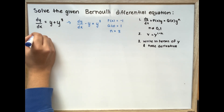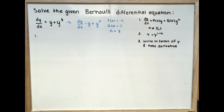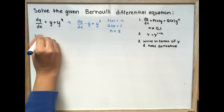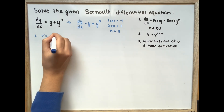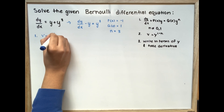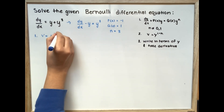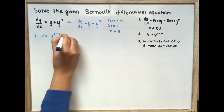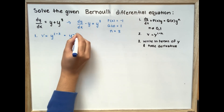We can set our v equal to y to the power of 1 minus n, which is 3. So this is equal to y to the power of negative 2.